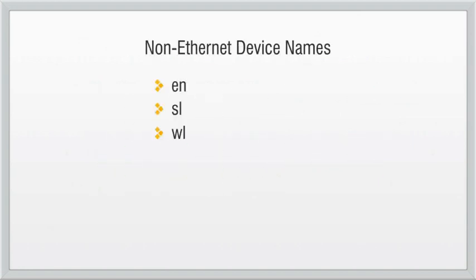In the preceding examples, every interface started with 'en' because they're Ethernet interfaces connected to an Ethernet switch. However, this is not the only kind of interface you can install in a Linux system. If you install a serial line interface for, say, a WAN connection, the name will begin with 'sl' instead of 'en' to indicate a serial interface. Similarly, if you install a wireless network interface, the alias will begin with 'wl' instead of 'en'.